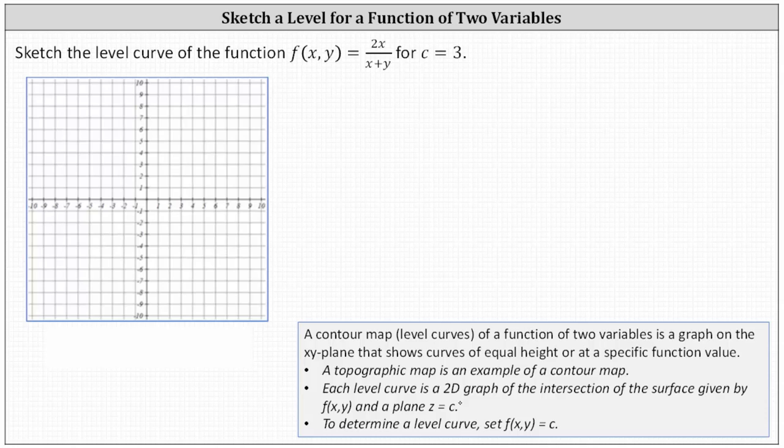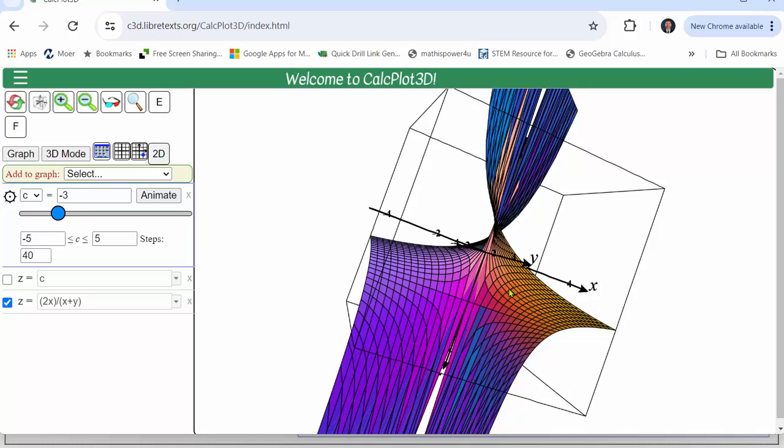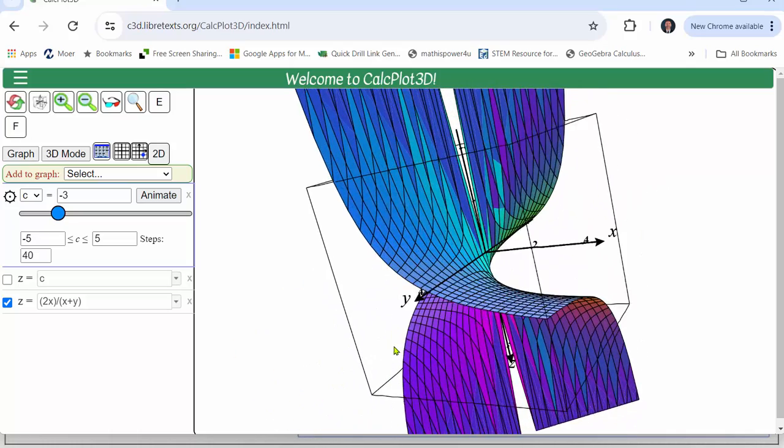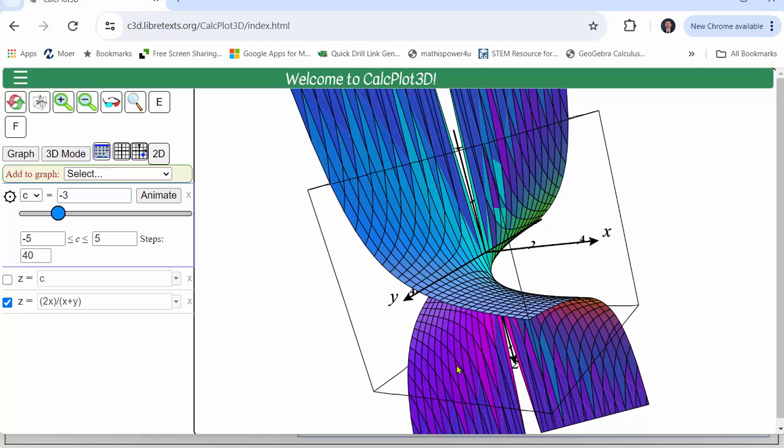Let's first look at this graphically. Here we see the graph of the given surface and now I'm going to graph the plane z equals c and then change the value of c. The intersection of the plane and the surface represents a level curve.